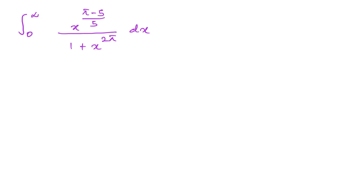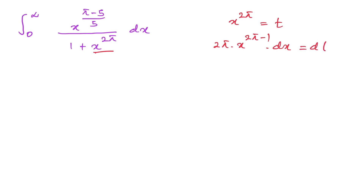How to begin? Well, first here we have x to the 2π. So I am going to take the substitution x to the 2π equal to t. Then we differentiate: 2π times x to the 2π minus 1, dx equals dt. We know x equals t to the 1 over 2π, so here instead of x we have t to the (2π minus 1) over 2π, dx equals dt.